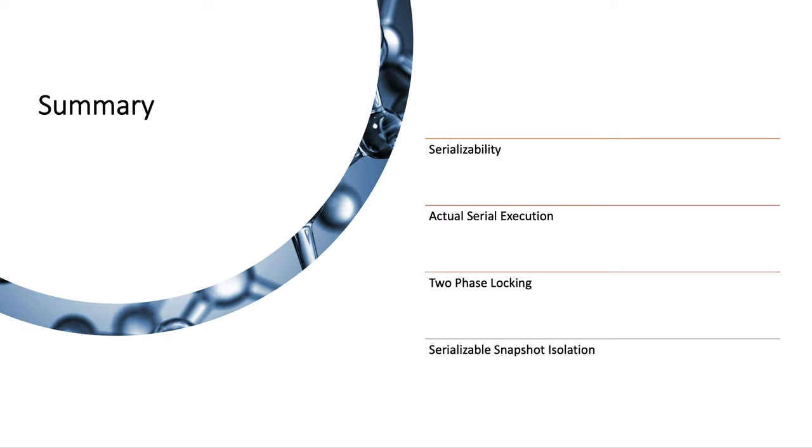To summarize what we have studied: we have seen what serializability is and how it overcomes various concurrency problems. We have seen three ways of serializability — actual serial execution, two-phase locking, and serializable snapshot isolation — and their implementations and advantages over each other. I hope you have a better understanding of how transactions work, the various concurrency control methods, and their advantages, disadvantages, and use cases. Please share with your friends and colleagues and keep learning. Thank you.